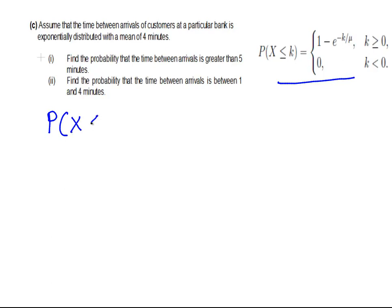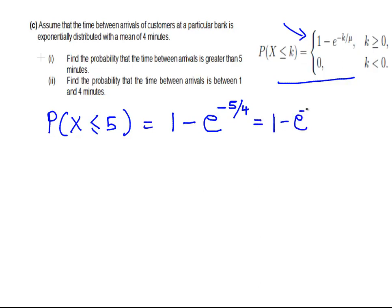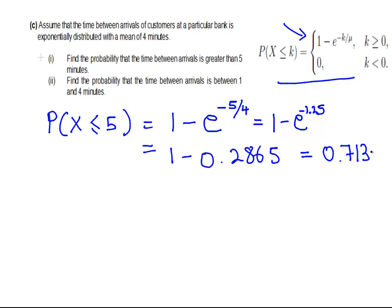The probability of X less than or equal to 5 — let's just work that one out first. We're going to use the top formula here, as long as k is greater than or equal to 0. So k is 5, and we can use that. That is 1 minus e to the power of minus 5 divided by 4. That's equal to 1 minus the exponential of minus 1.25. And that is equal to 1 minus 0.2865, which equals 0.7135.